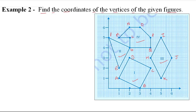For point A: horizontal is 1 and vertical is also 1, so A is (1,1). For point B: it's on the x-axis, so it becomes (3,0). For point C: horizontal is 4 and vertical is 2, so C is (4,2). For point D: x-axis is 2 and y-axis is 3, so D is (2,3).